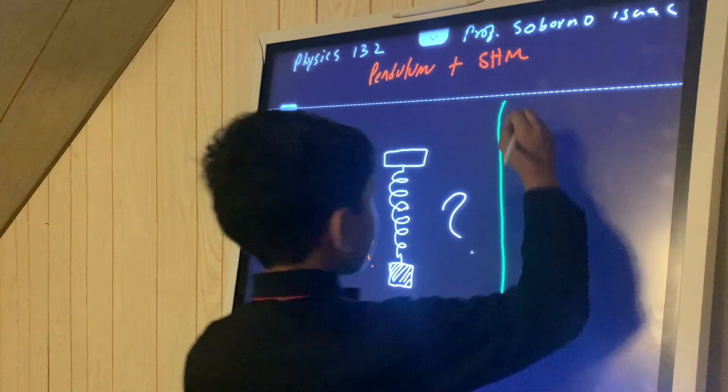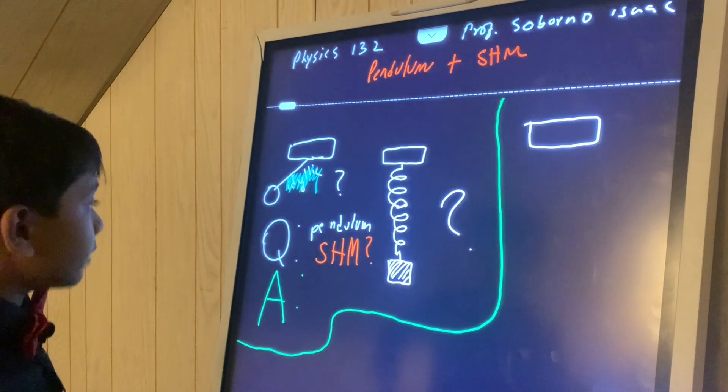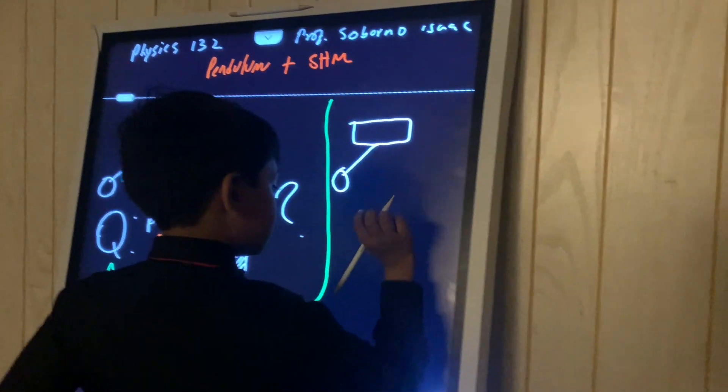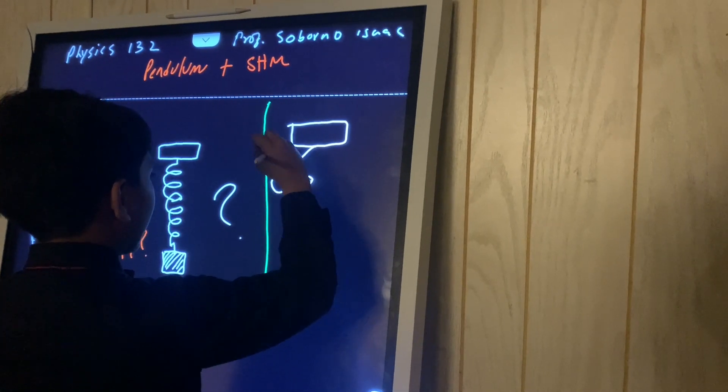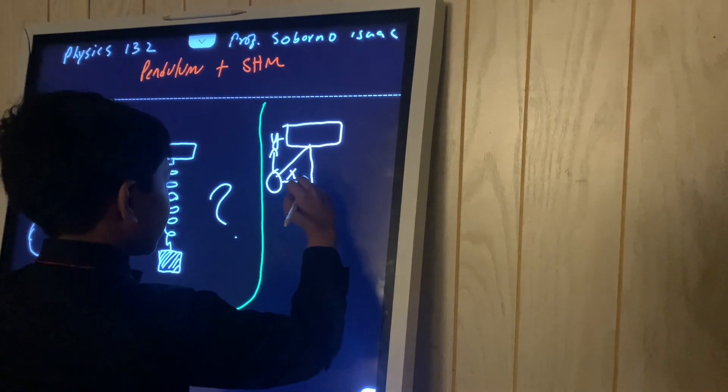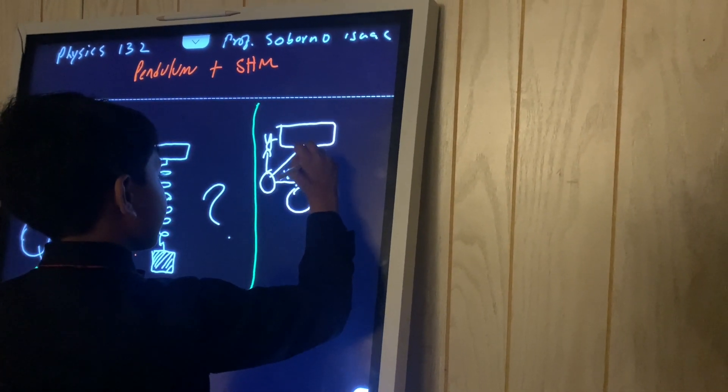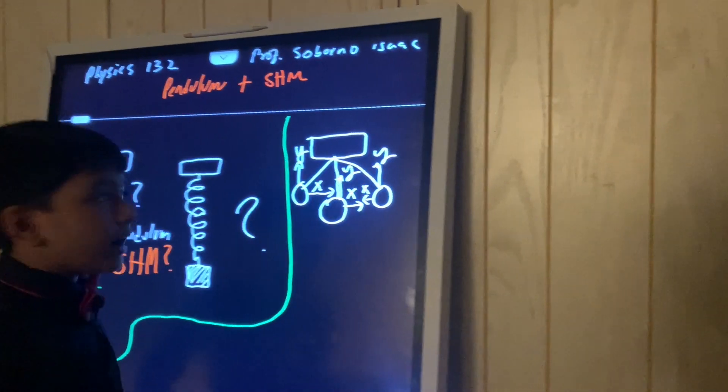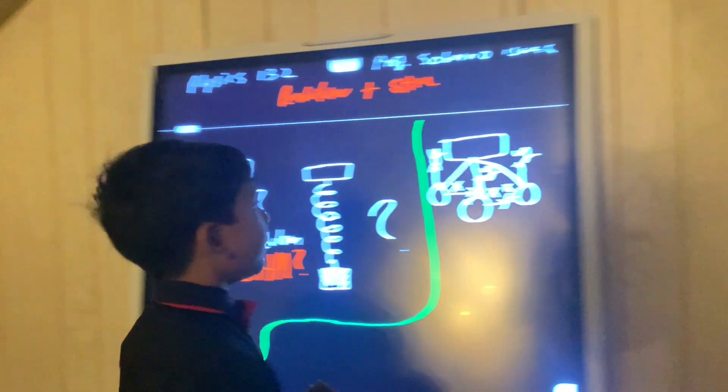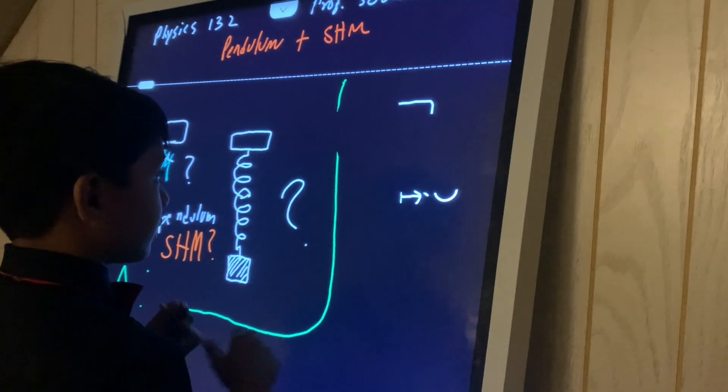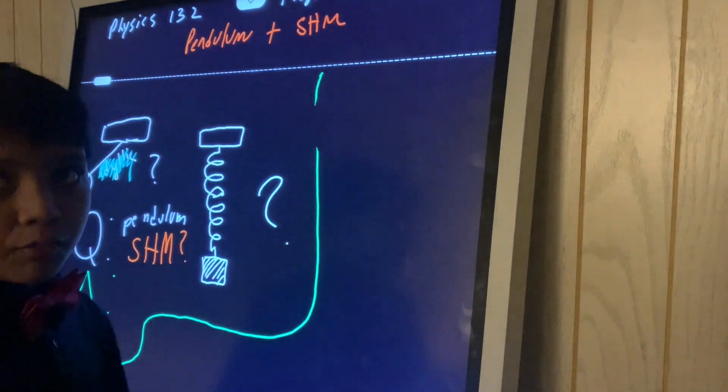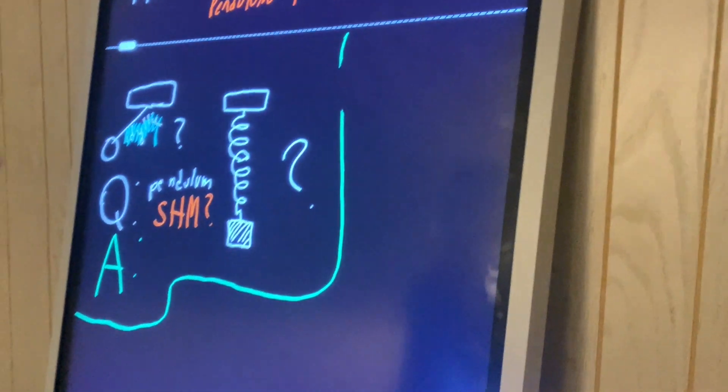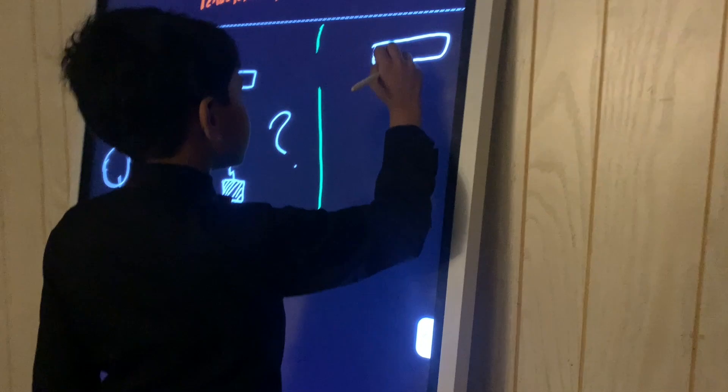So, it seems like a pendulum would be two-dimensional motion since a pendulum both has some things in the X and Y direction. It both changes in the X and Y direction. Now, it seems like it's two-dimensional, but the reality is it's actually very one-dimensional. How is it one-dimensional, you may ask? Well, think about angles.